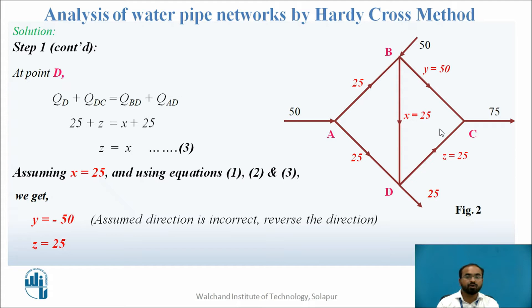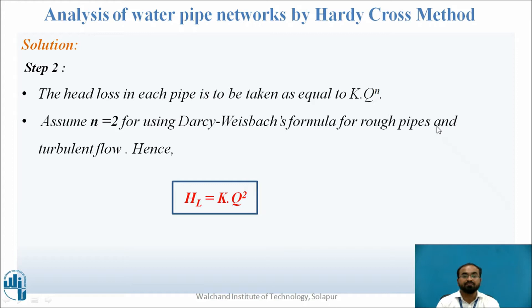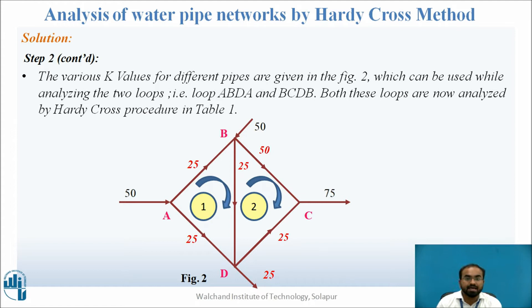Now I know all the flow rates. I will calculate the individual head loss of every pipe using the formula given: HL equals K into Q raised to N. I don't know the value of N, so I use Darcy's Weisbach formula where N equals 2. If using Hazen-Williams formula, N equals 1.85, but here I use Darcy's Weisbach, so the equation becomes HL equals K into Q raised to 2. I will divide the pipeline network into two loops: loop 1 is A-B-D-A and loop 2 is B-C-D-B. Here B-D is a common pipe.